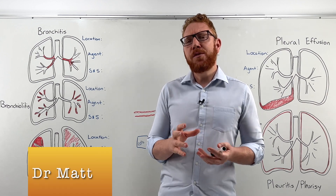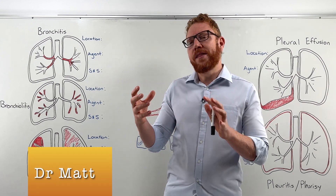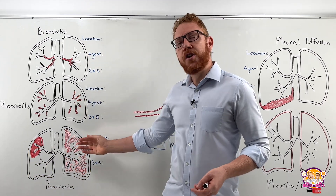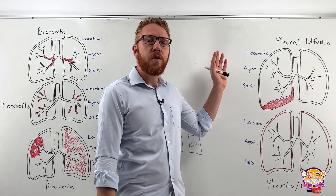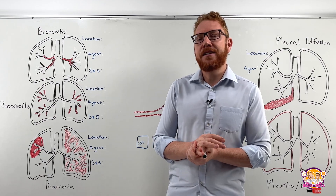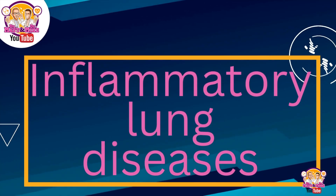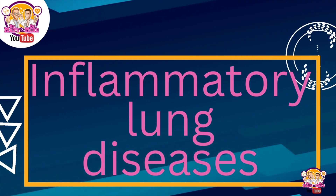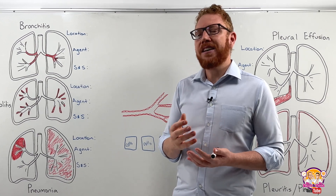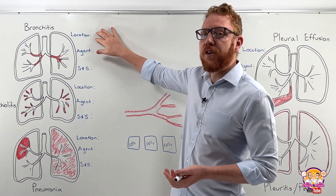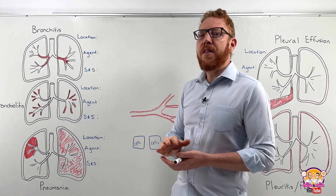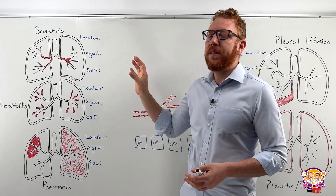Hi everyone, Dr. Matt here. So what happens when you combine inflammation with lung tissue? Well, we may get conditions like bronchitis, bronchiolitis, pneumonia, pleurisy or pleural effusion. This lecture is going to cover the common inflammatory lung diseases. We're going to compare the five most common types, specifically in reference to the location of the inflammation, the agent that leads to it, and the signs and symptoms associated with each condition.